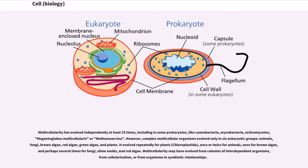Multicellularity has evolved independently at least 25 times, including in some prokaryotes, like cyanobacteria, myxobacteria, actinomycetes, Magnetoglobus multicellularis or Methanosarcina. However, complex multicellular organisms evolved only in six eukaryotic groups: animals, fungi, brown algae, red algae, green algae, and plants.